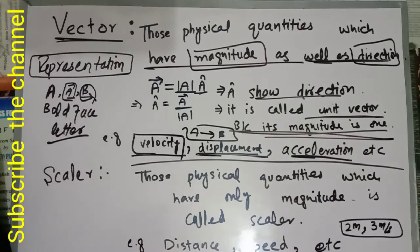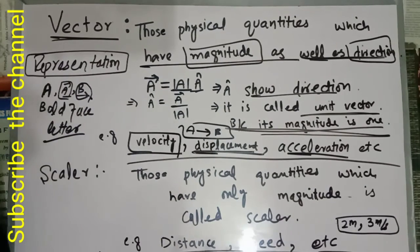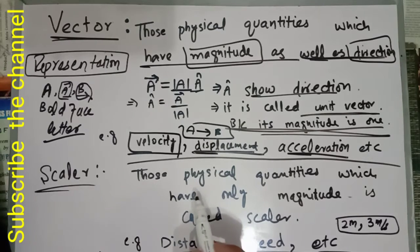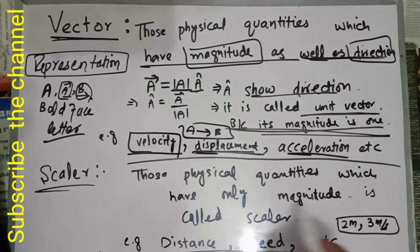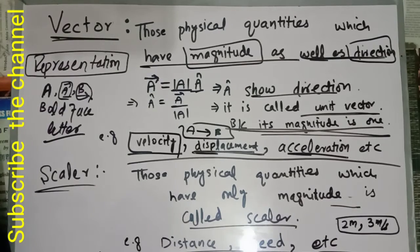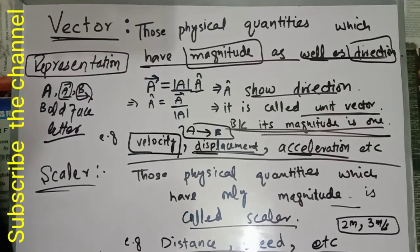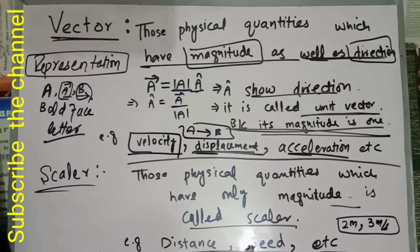Speed has only magnitude. Speed is a scalar quantity. It is the magnitude of velocity. Velocity has proper direction. Now scalar: those physical quantities which have only magnitude are called scalar.